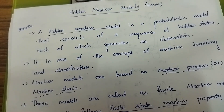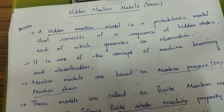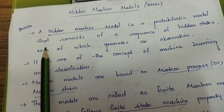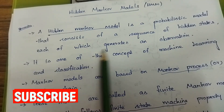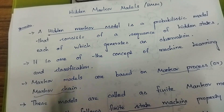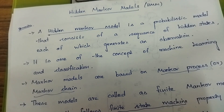Good morning. Today we are going to study about hidden Markov model. A hidden Markov model is a probabilistic model. Already you know about probabilistic and Bayesian rule. A hidden Markov model consists of a sequence of hidden states, each of which generates an observation. Hidden states are intermediate snapshots of the original input data.